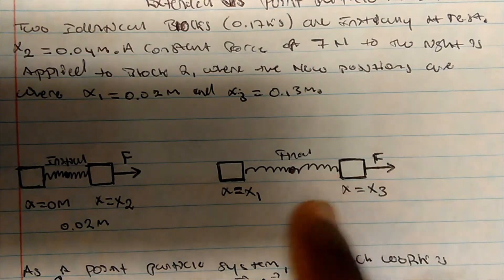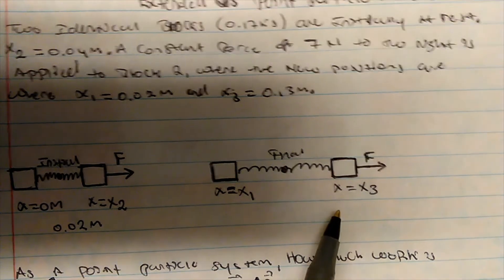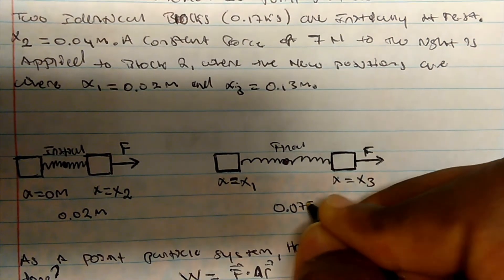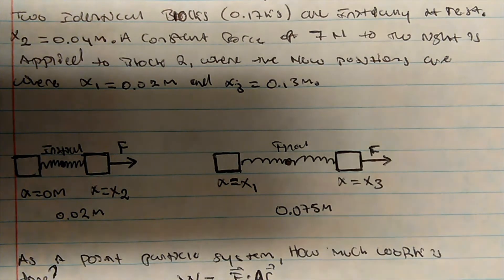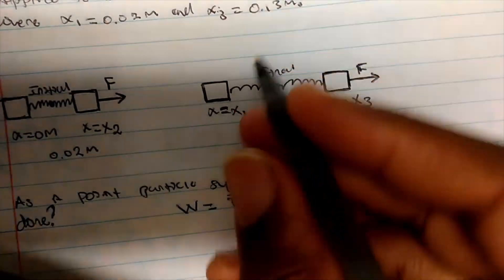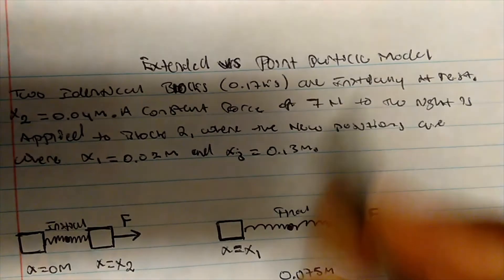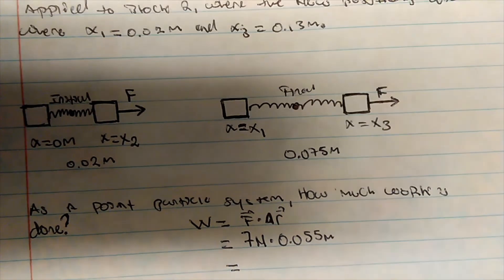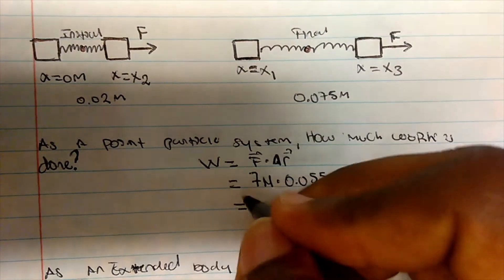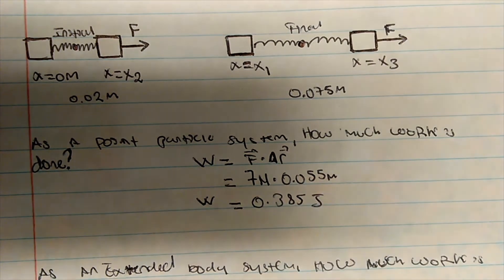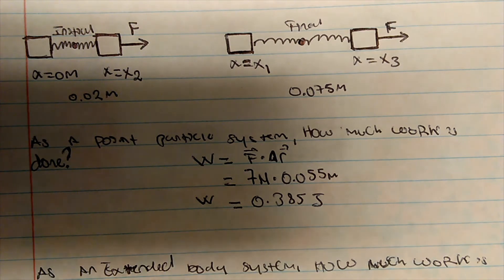Now for the final position, we have x1 = 0.02 and x3 = 0.13. Taking the average: (0.02 + 0.13) / 2 gives us a final center of mass position of 0.075 meters. So the change in displacement of the center of mass is 0.075 minus 0.02 = 0.055 meters. The work equals the force — which they gave us as seven newtons — multiplied by 0.055 meters, giving us work done as a point particle system of 0.385 joules.